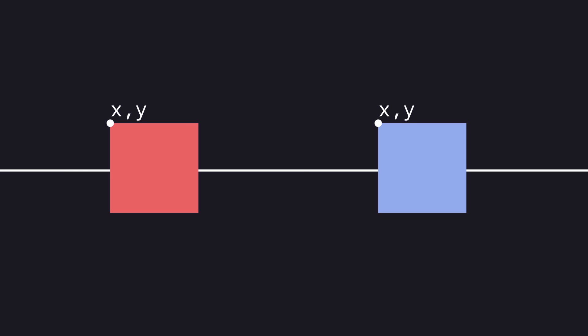To code rectangular collision detection, we first need two rectangles. Each rectangle has an associated x-y position, along with a width and height.